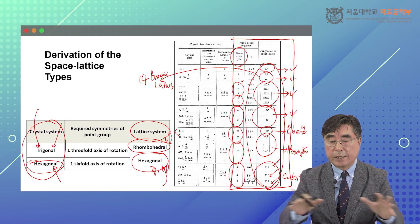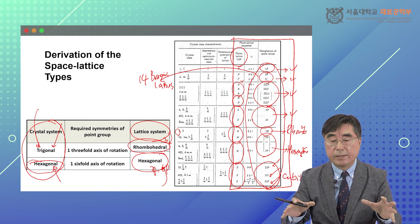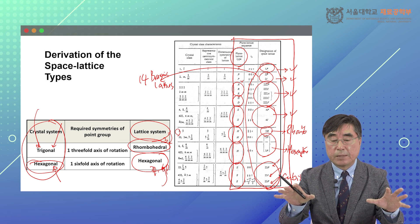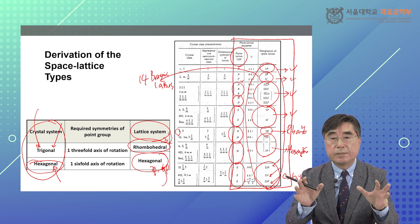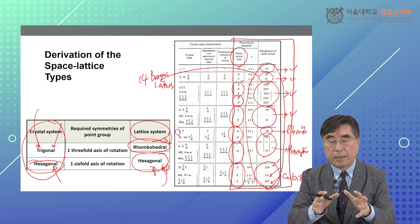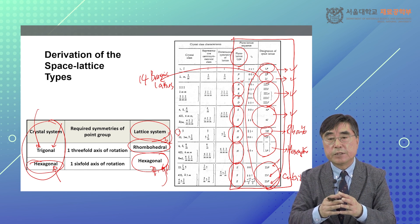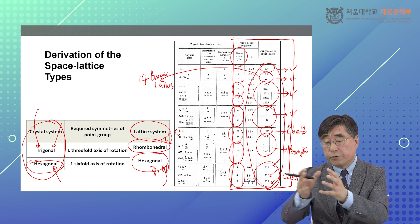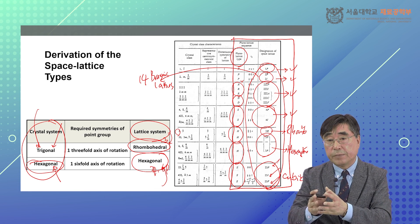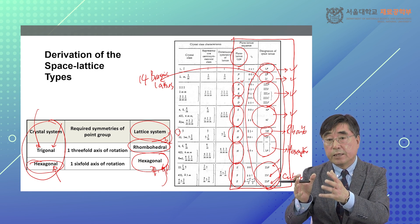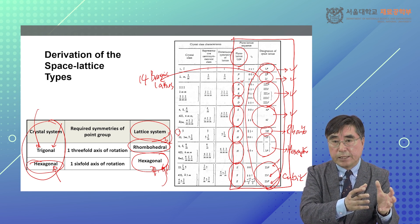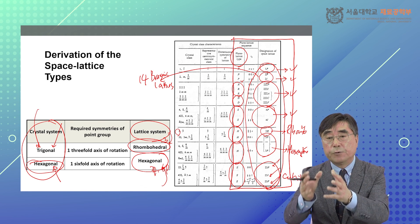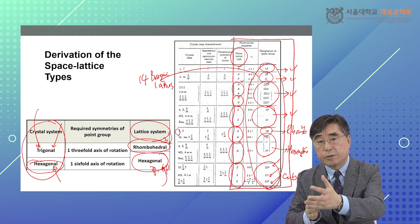So this is the end of this part of the lecture. I systematically defined 7 crystal systems and 14 Bravais lattices. Remember that symmetry is the most important part for deriving these 7 crystal systems and 14 Bravais lattices. We want to define the unit cell, and by the translation of this unit cell all the crystal structure can be defined. When you define the unit cell shapes, symmetry is the basic ingredient for systematically defining these 7 crystal systems.